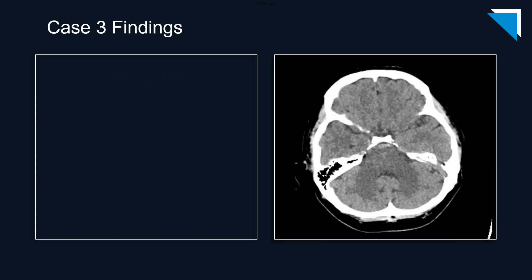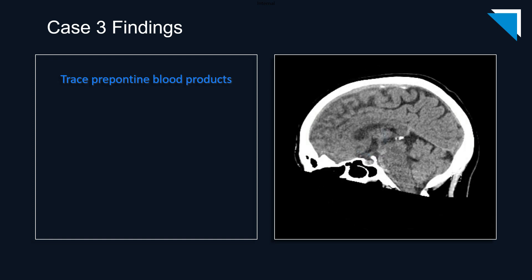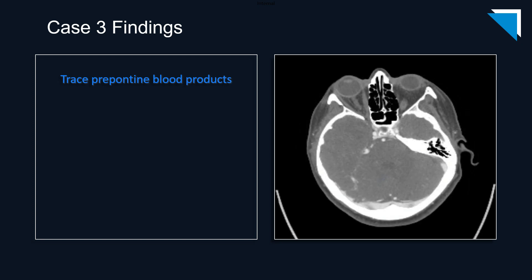Returning to this axial image from the non-contrast scan, there are trace prepontine subarachnoid blood products. The finding is very subtle but evident on multiple slices, and it is equally subtle on this sagittal image. There is yet another subtle finding on the post-contrast images: a small dilated vessel is revealed in the right cerebellopontine angle.